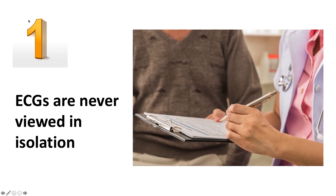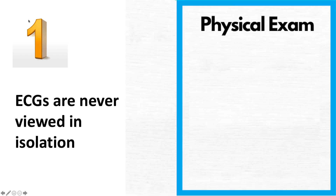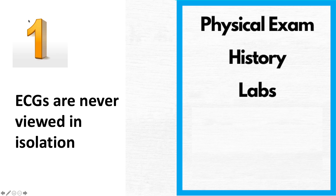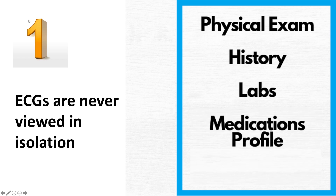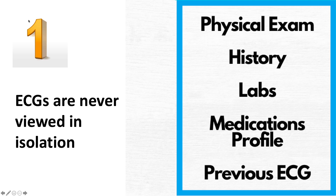Number one: an ECG is never viewed in isolation. They are completed and examined in conjunction with other clinical pieces such as a physical exam, a patient's history, lab results, looking at their medication profile, a previous ECG if they have it, and future repeated ECGs.